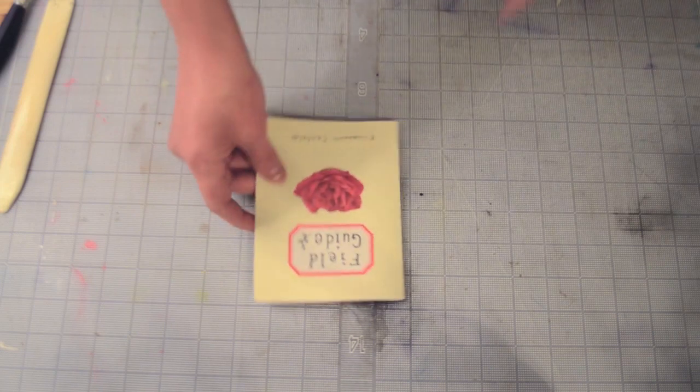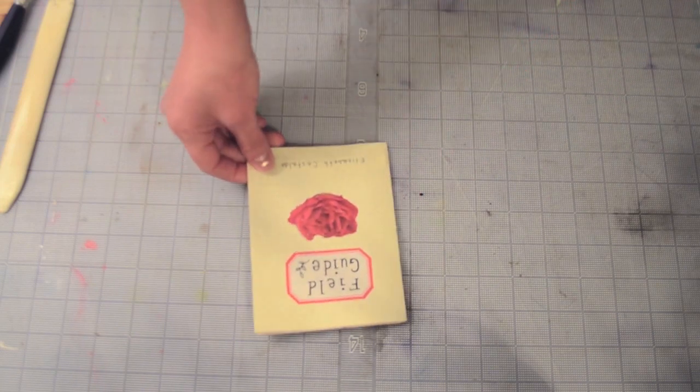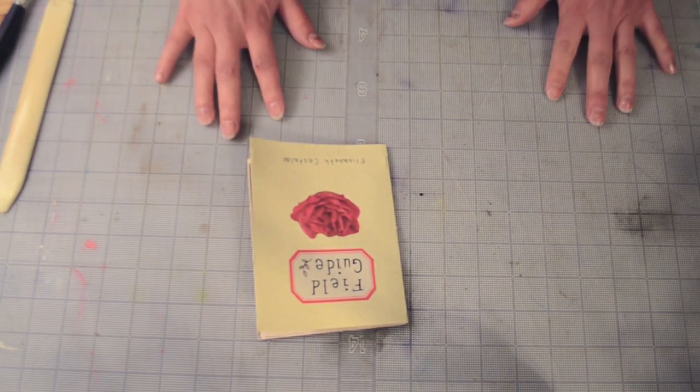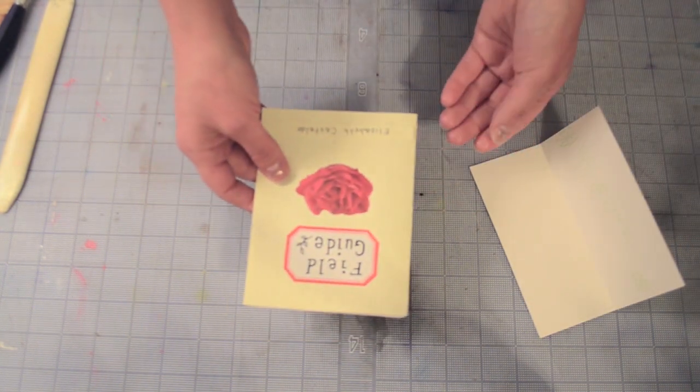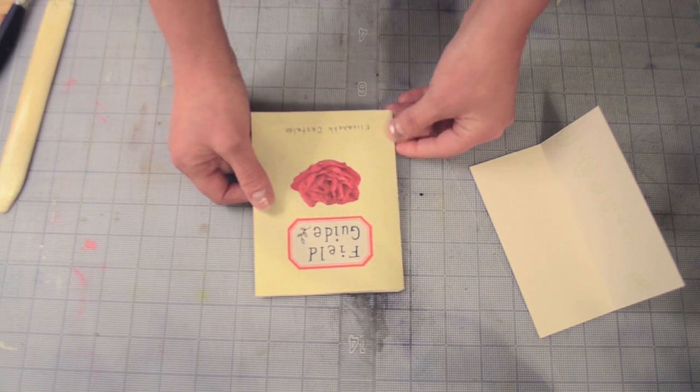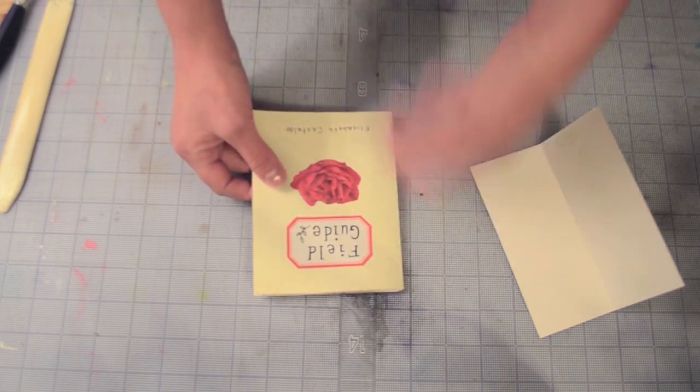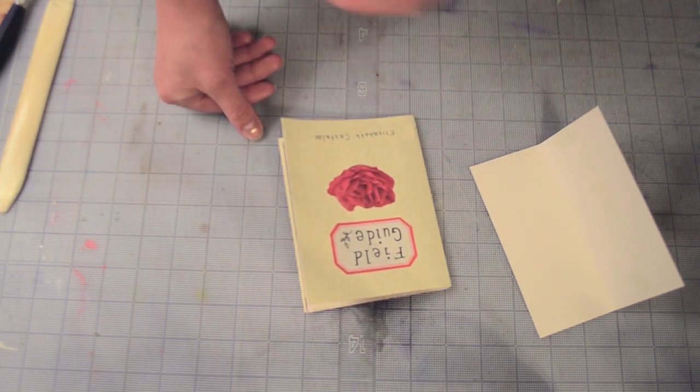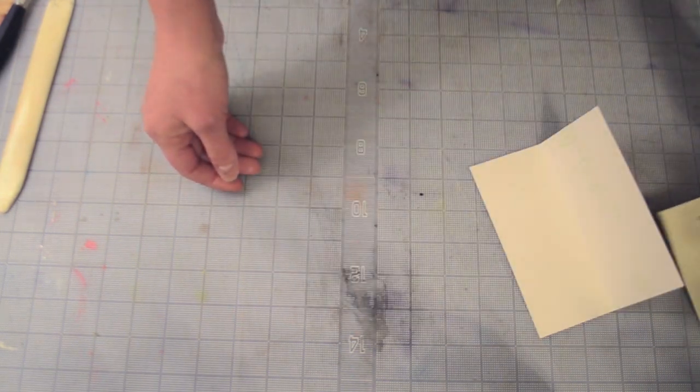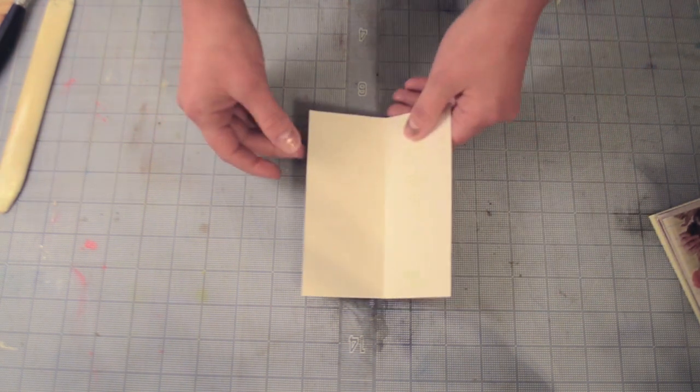Now, we have to punch holes through the spine for sewing, so we'll have to make a sewing guide. This is kind of an optional step because if you're just making one book, you can really just measure and punch right on the inside of the book. But if you're making a lot of books, like in our case, you probably want to make a sewing guide, which will make it a little bit easier.